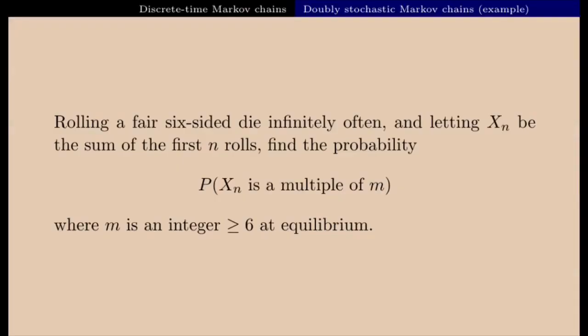So here is the example. We are going to assume that we roll a die infinitely often and we are going to call x_n the sum of the first n rolls. The goal is to find the probability that the sum of the first n rolls is a multiple of some given integer m at equilibrium. For technical reasons, we are going to assume that this integer m is larger than or equal to 6.